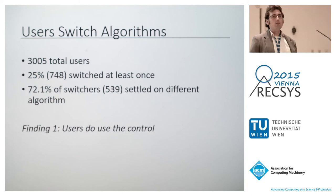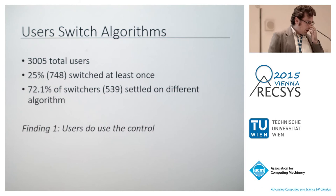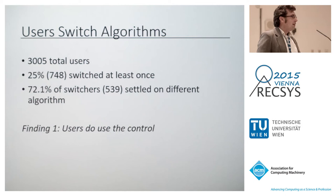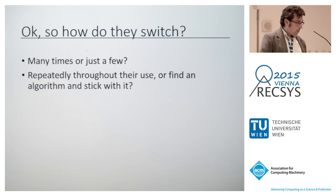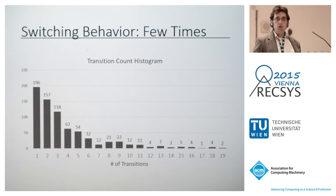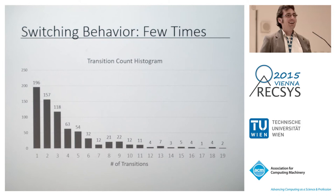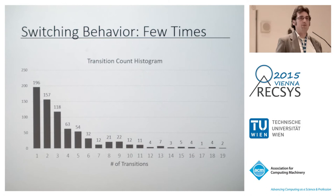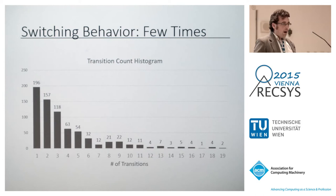Of 3,005 total users, 25% used the control — not even the majority, but 25% experimented with it. Of those who experimented, 72% ultimately picked a different algorithm than they started with. So finding number one: users did use this thing. As for how much, most users switched less than five times. We had one user who switched about 7,000 times — clearly an outlier. Most users: five times or fewer.